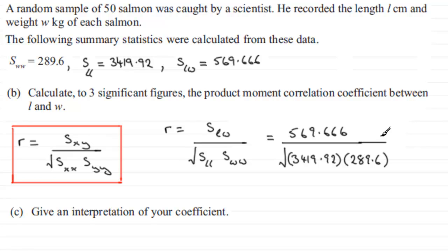Well, when you do this calculation on your calculator, you should find you get 0.5724 and so on. And we've got to give our value to three significant figures, so if we give that to three significant figures, it's going to be 0.572.